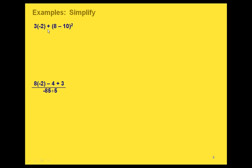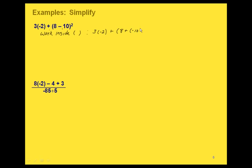Here are a couple more examples. For this one, we have a multiplication, an addition, a subtraction inside the parentheses, and an exponent. Even though we have an exponent, we have to simplify inside the parentheses first. This is going to take a little bit of work because it's not as simple as a subtraction — we can rewrite it as an addition. Adding those two gives us an answer of negative 2.